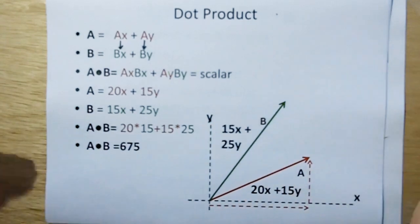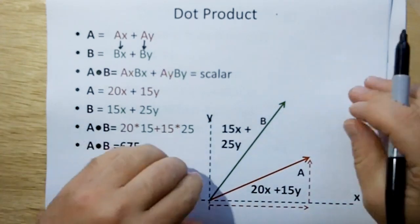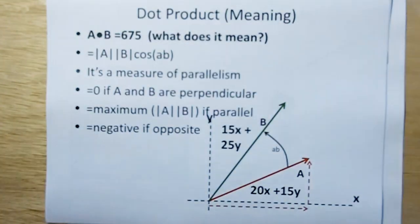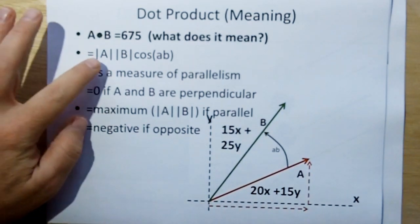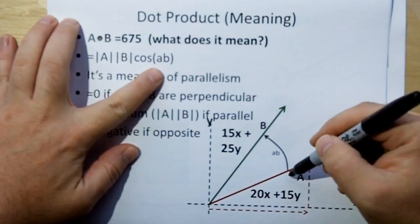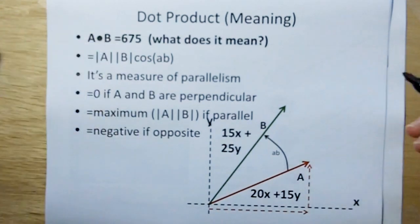Well, what does that mean? It turns out it has an interesting meaning. It works out that if you took the magnitude of vector A and the magnitude of vector B and you took the cosine of the angle between A and B, that would be the result. And what it ends up being is a measure of parallelism.